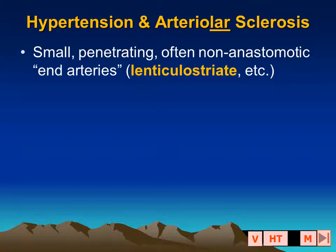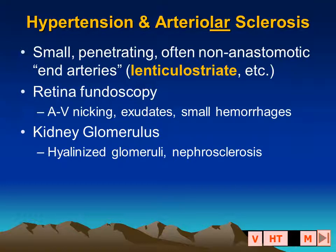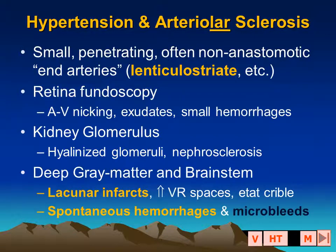These hypertensive changes primarily affect small caliber vessels — penetrating non-anastomotic end arteries — most particularly the lenticulostriate vessels that supply the basal ganglia and the internal capsule. The same type of hypertensive vessel changes may be seen in the patient's fundus, with AV nicking, exudates, and small hemorrhages. Small vessels also supply the renal glomerulus, and this is associated with nephrosclerosis.